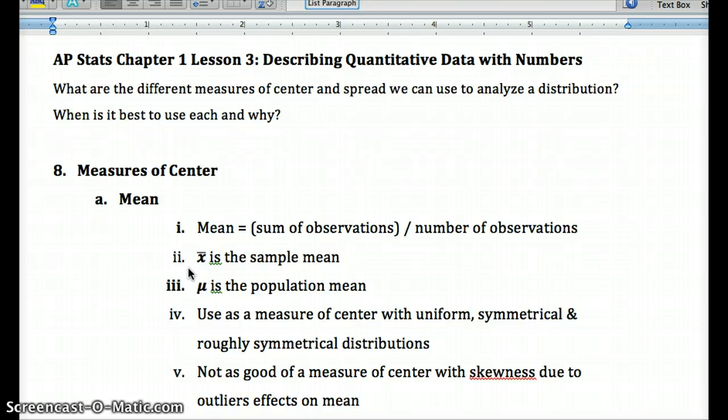Meaning from our sample data set. The true population mean, meaning if we had all the data in the entire population, would be mu, this right here. Looks kind of like a u. So oftentimes we're using a sample mean as an estimate of the true population mean.